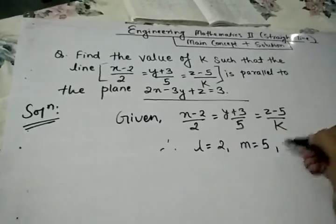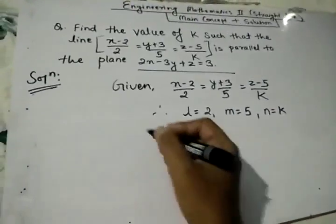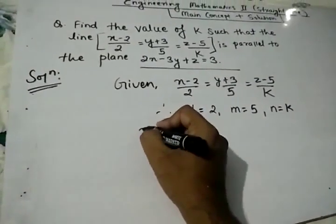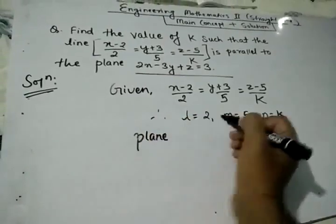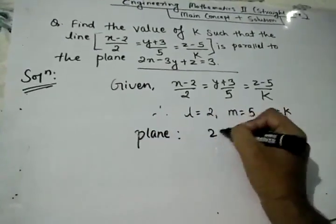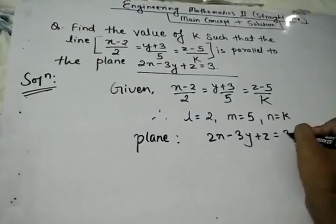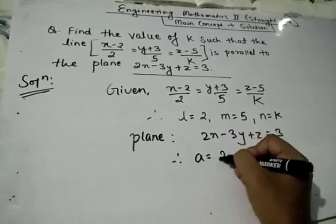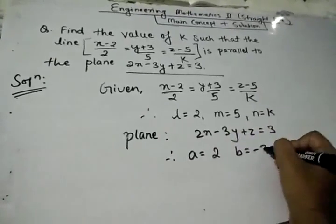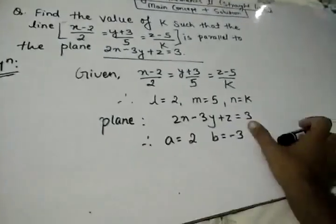Similarly, the plane is given: 2X - 3Y + Z = 3. Therefore A = 2, B = -3, C = 1.